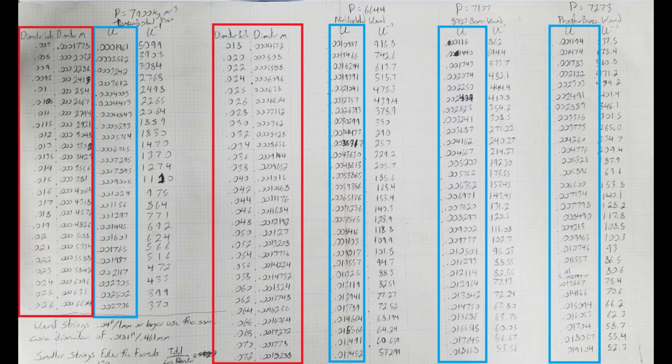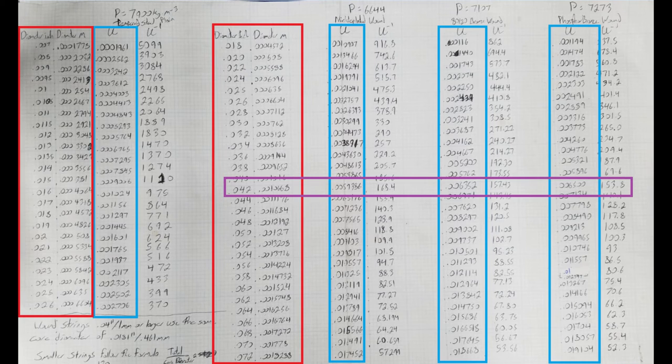For our low E string mass per unit length of 0.00614, we match fairly closely at a 0.042 inch diameter, 8020 bronze wound string. You can try using this chart to find the closest diameter that would almost fit for the other two wound string types, nickel plated and phosphor bronze.